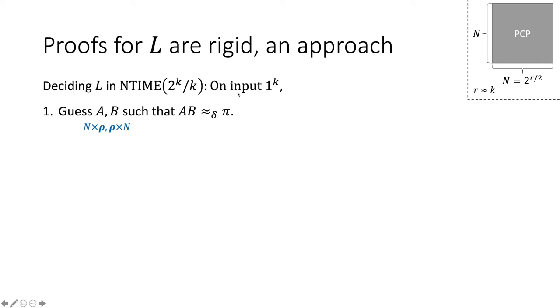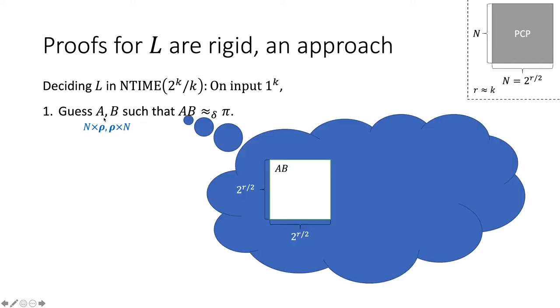The decision procedure works as follows. Given input 1 to the k, pi was not rigid, right? So we'll guess a low rank matrix that approximates pi and we'll guess its decomposition. And this is really the key point, that we have to guess the decomposition because we can't even write all of pi down, nor can we write A times B down entirely, because that would already be 2 to the k time. We need to save that k factor. So we'll write A and B separately, the decomposition.